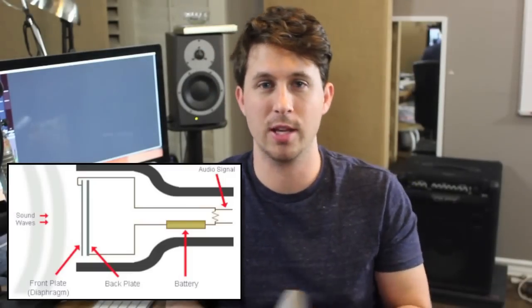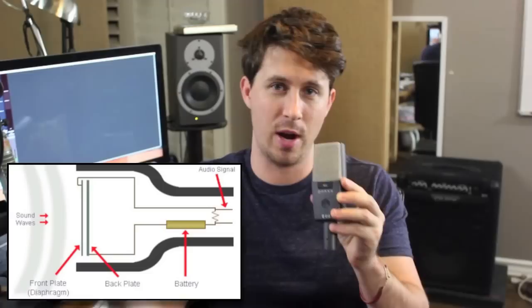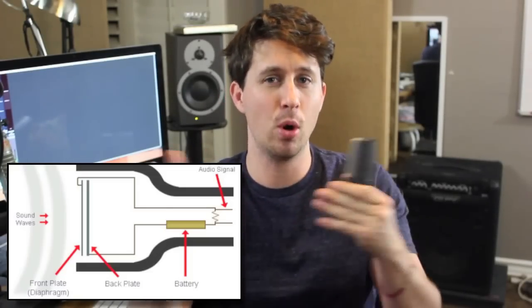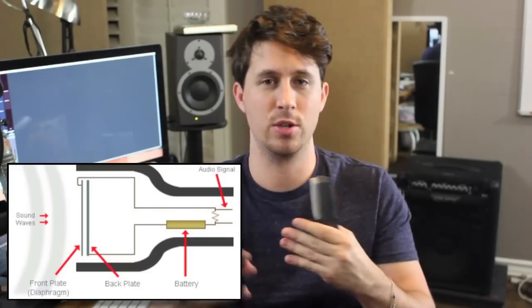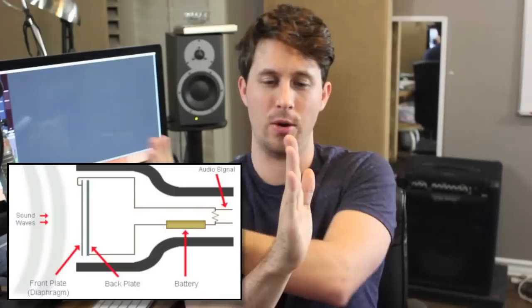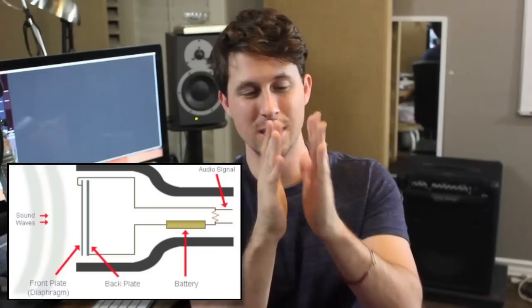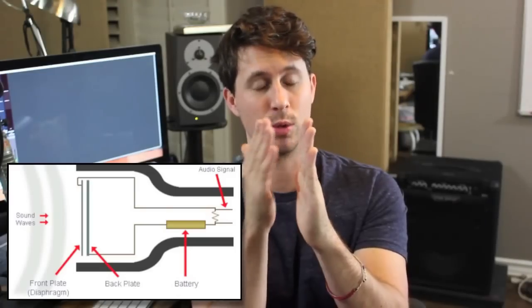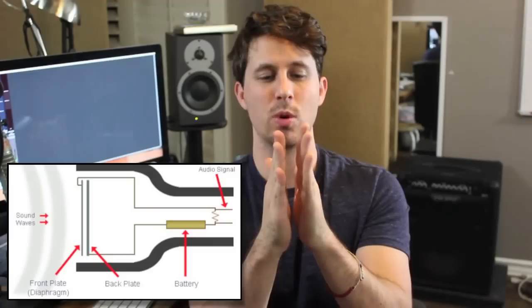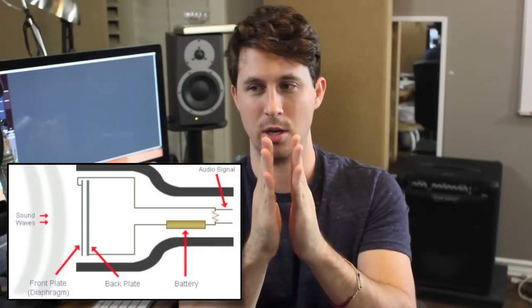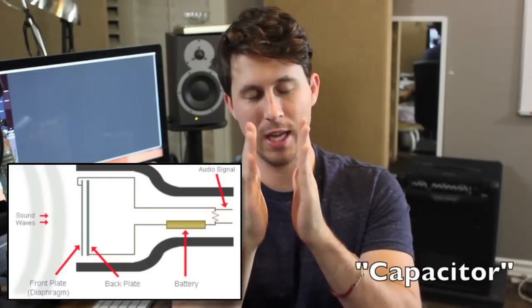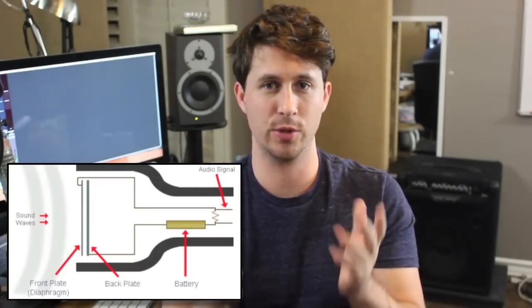There's a power supply — that's why condenser microphones require phantom power, external power. It's because there is a charge that needs to be applied to the plates, creating a polarized charge. The front plate will have more negative energy and the back plate will have more positive energy, or vice versa. Now as a quick side note, this whole situation — the back plate, the diaphragm, and the space between them with the charge — that's called a capacitor. And capacitors used to be called condensers, which is how condenser microphones got their name.